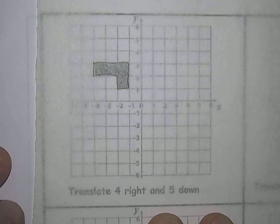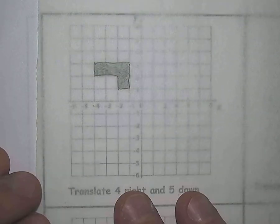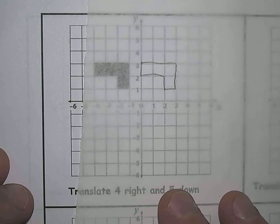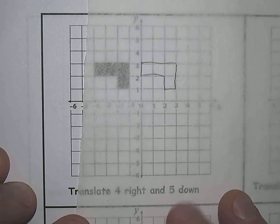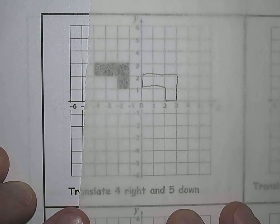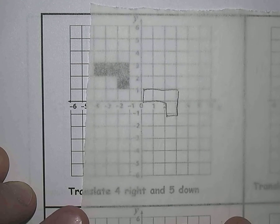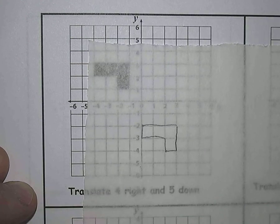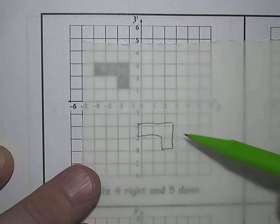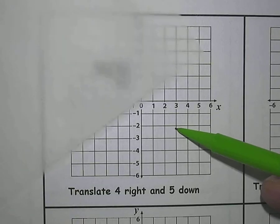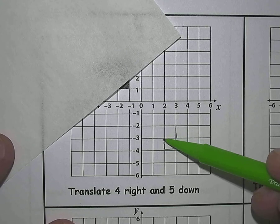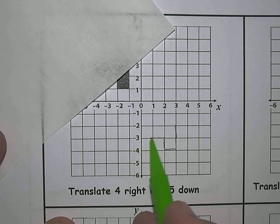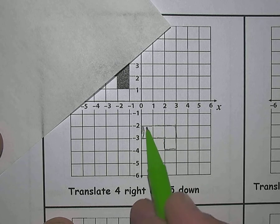Translation is sliding a shape. Four right — one, two, three, four. And five down — one, two, three, four, five. It's a straightforward thing to do. You've just got to be careful that you count it right. So there is the first one translated.